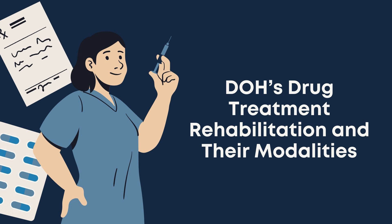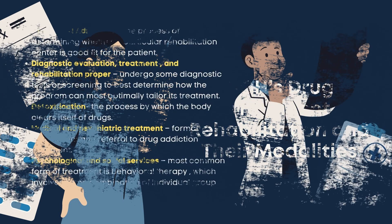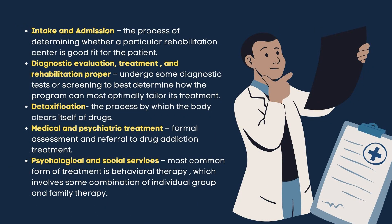So what is the Department of Health's drug treatment and rehabilitation and their new modalities? First is intake and admission, the process of determining whether a particular rehabilitation center is fit for the patient. Then followed by diagnostic evaluation, treatment, and rehabilitation proper, where they undergo diagnostic tests or screening to best determine how the program can most optimally tailor its treatment. The third is detoxification, the process by which the body clears itself from drugs, followed by medical and psychiatric treatment, which involves formal assessment and referral to drug addiction treatment. And lastly, psychological and social services — the most common form of treatment, involving behavioral therapy that includes individual, group, and family therapy.